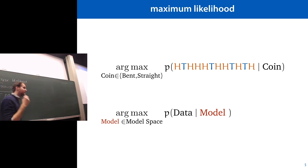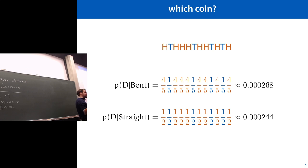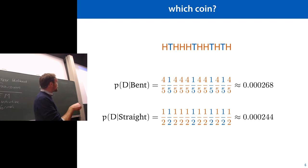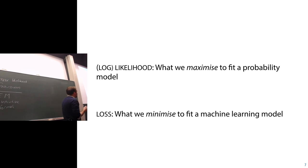Sometimes this principle goes wrong, but in many cases it's a pretty good one. To finish the coin example: we assume every coin flip is independent, so the probability of the whole sequence is just the individual probabilities multiplied together. For the bent coin, we multiply four-fifths for every heads and one-fifth for every tail. For the straight coin, we multiply 12 one-halves. The probabilities are close, but ultimately we should prefer the bent coin slightly.